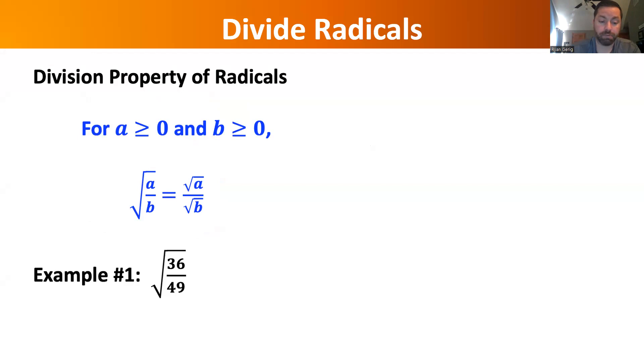So here's an example. The square root of 36 over 49, I can rewrite as the square root of 36 over the square root of 49, which is nice because the square root of 36 is 6 and the square root of 49 is 7, and I'm done with that problem.